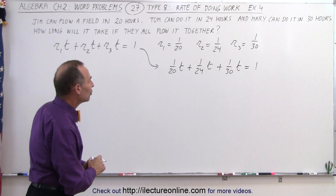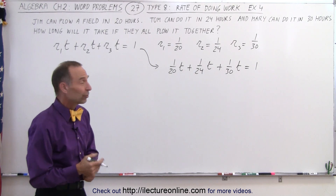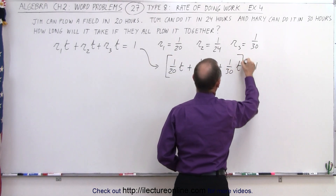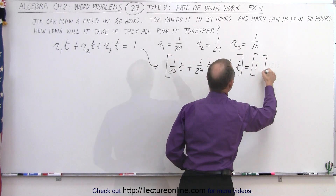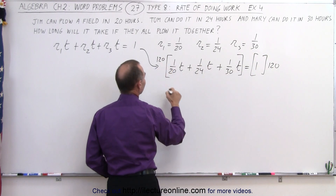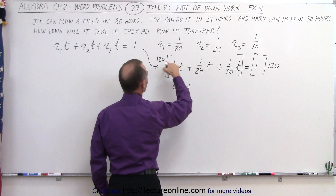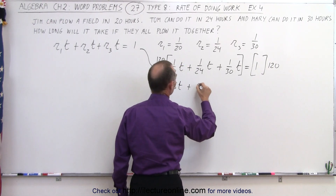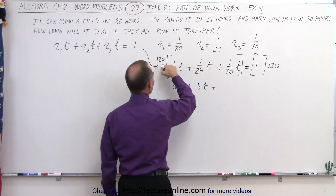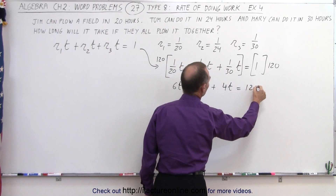The next thing we need to do is find the lowest common denominator, which in this case is 120. So we multiply the left and the right side by 120. 20 goes into 120 six times, so this is 6t, plus 24 goes into 120 five times, so it's plus 5t, plus 30 goes into 120 four times, so that would be plus 4t, equals 120.